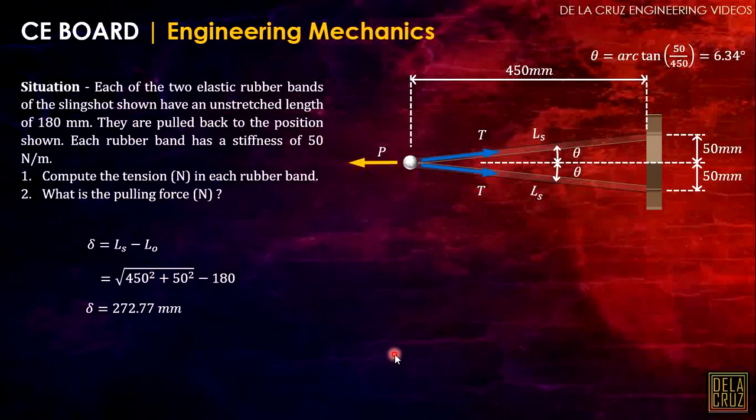Take note that the stiffness of the spring or any material is given by this formula: the force divided by the deflection. In this case, that is the tension force. We can solve the tension here because we have K and the elongation. Cross multiply. K here is 50 newtons per millimeter, so convert by dividing by 1000, multiply by the elongation.